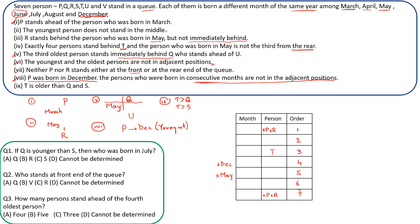To solve the set, we start with the attribute having the most information. Looking at all clues, May has the most references — it appears in clues 3, 4, and 5, plus a negation. So let's find valid positions for May. May cannot be at position 7, 6, or 5 (negated), and not at position 4 either, because that would force Q to position 3.